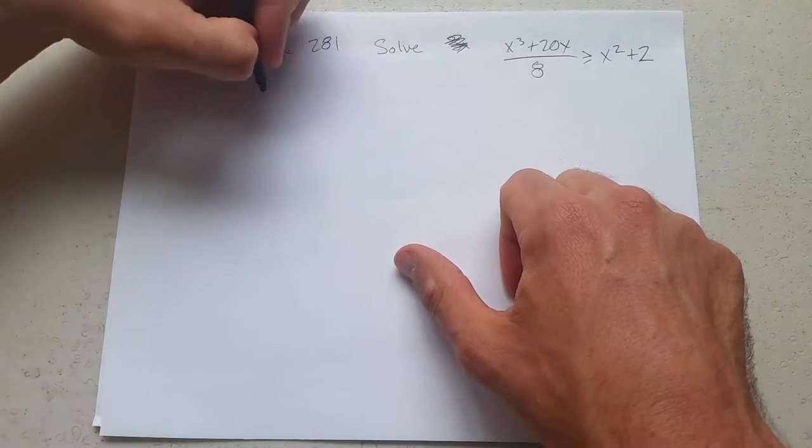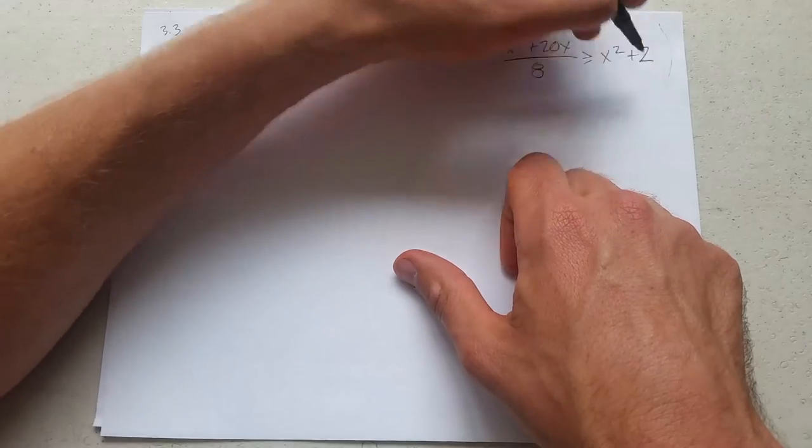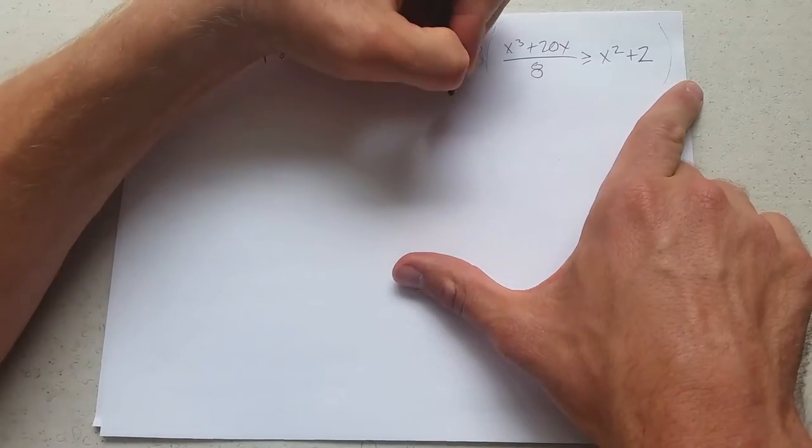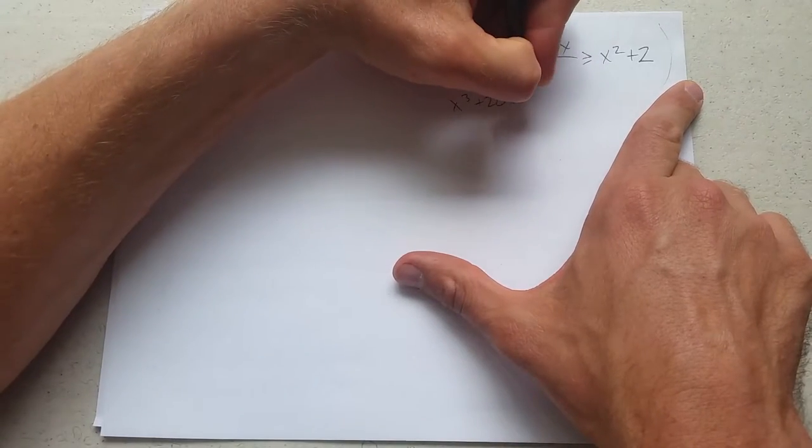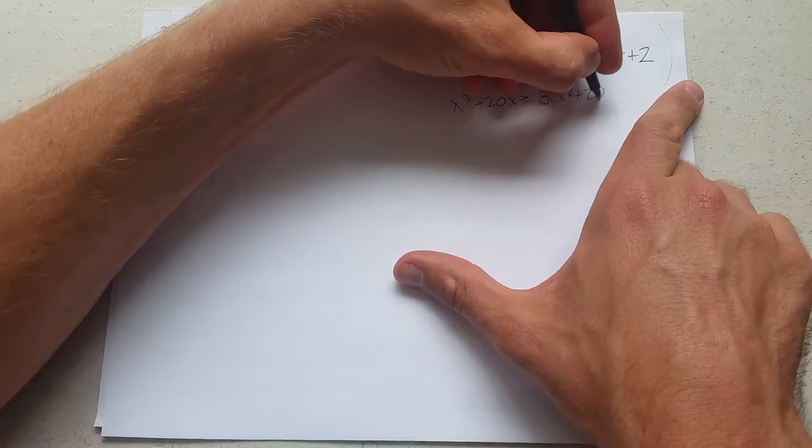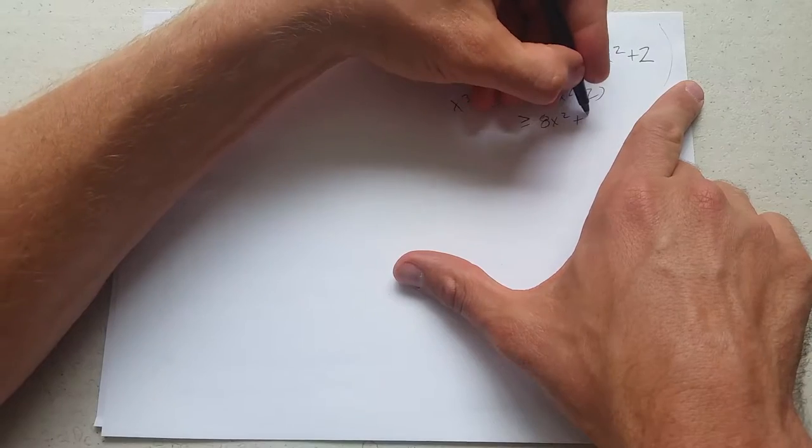Step 1, multiply by 8. Multiply by 8 knocks out the fraction here. I have to multiply the entire right side by 8. x cubed plus 20x greater than or equal to 8x squared plus 16.